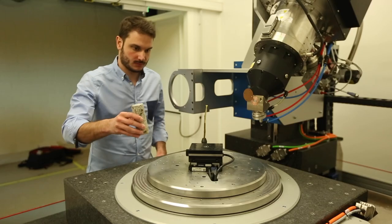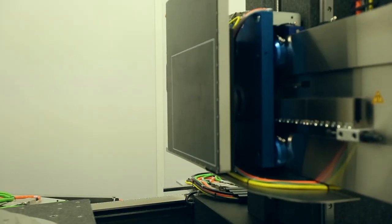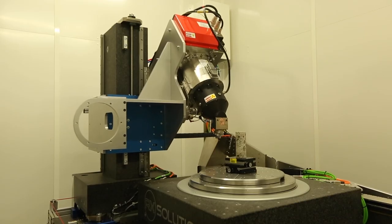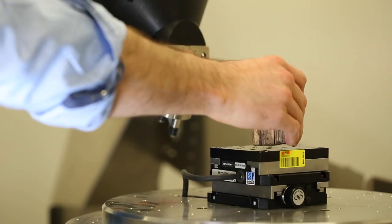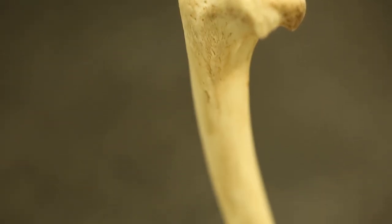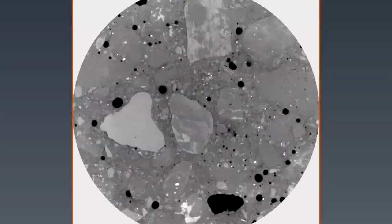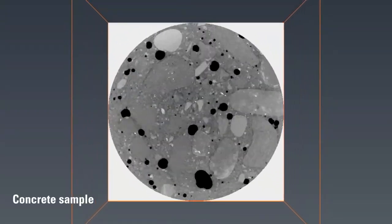A tomograph is a kind of scanner, as we use in the medical domain, and for us in engineering we use it to see within materials. We can scan nearly every kind of material — it can be wood, bones, soil, rock, or construction material — and we can see the variation in density of the materials.